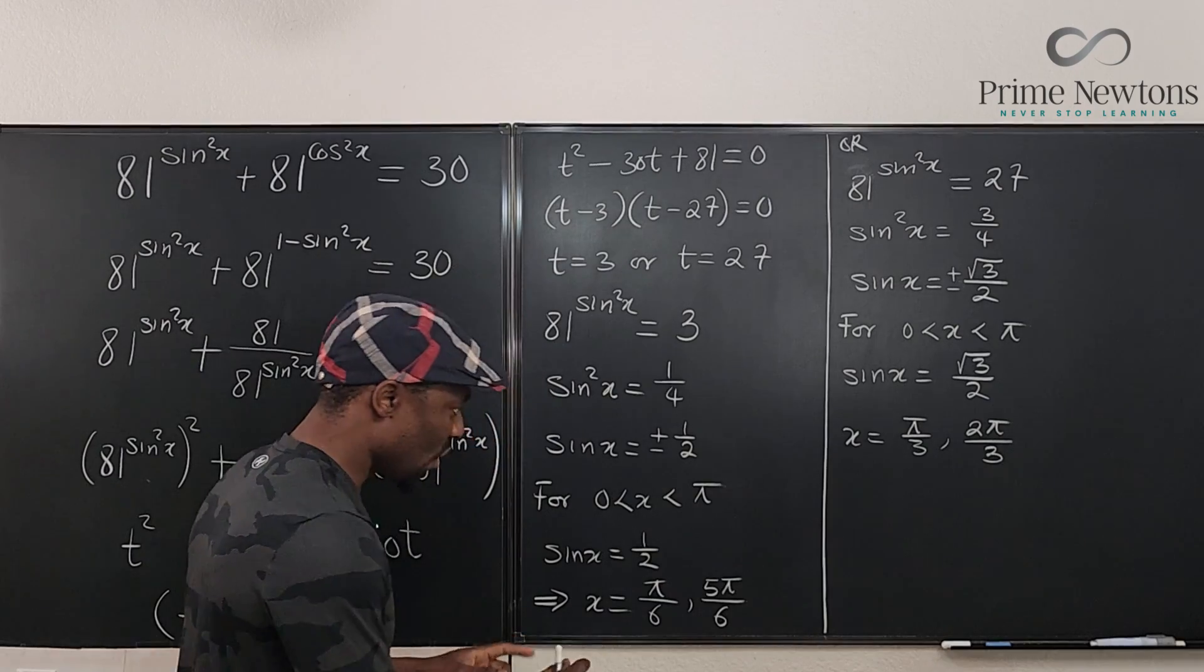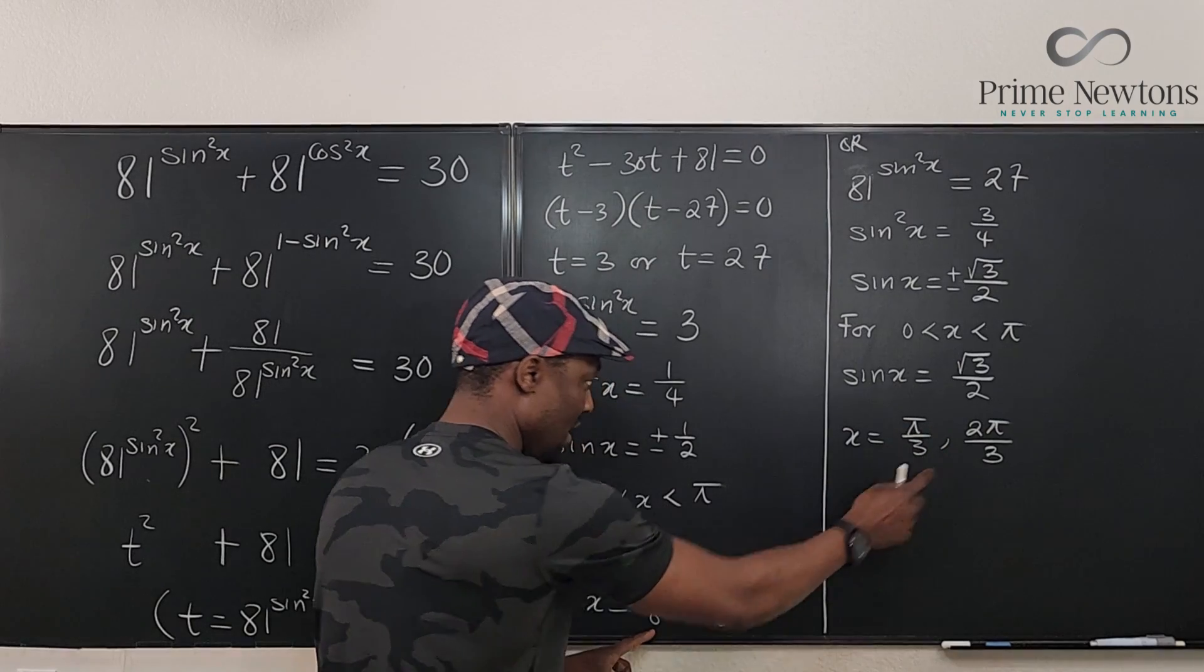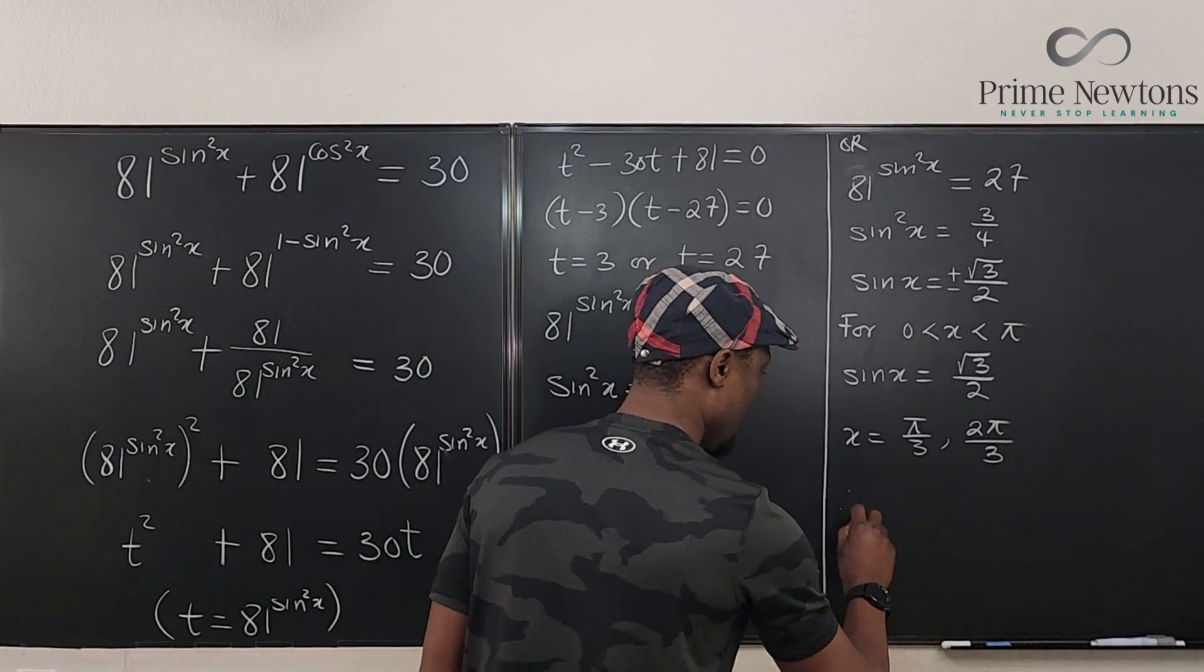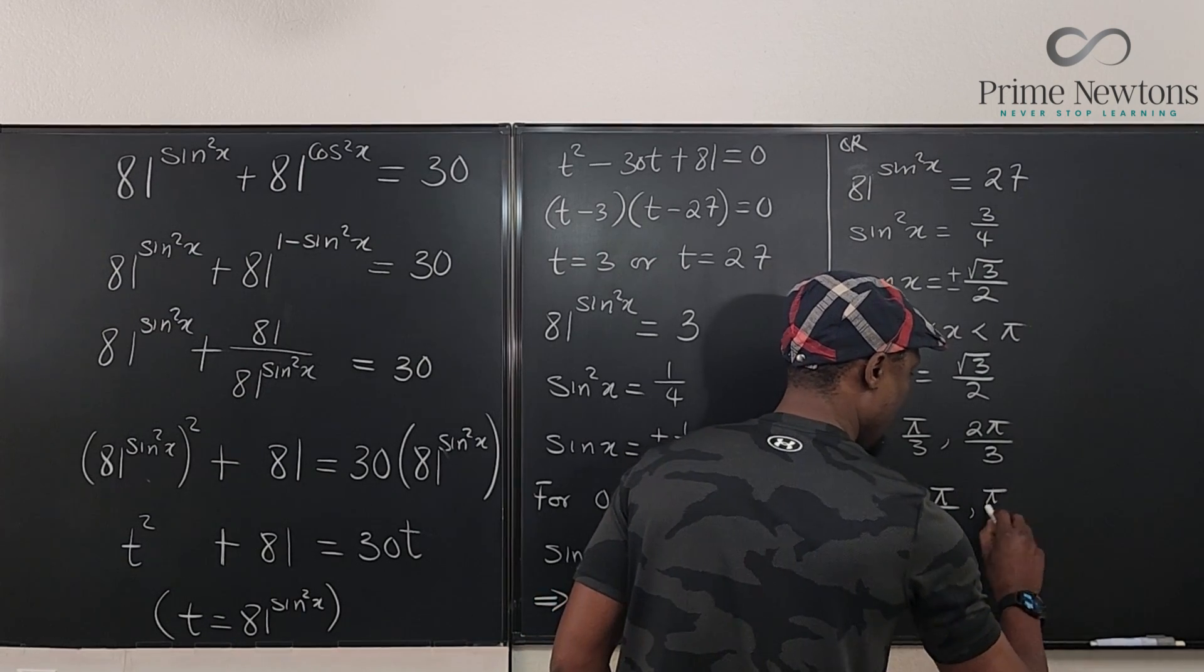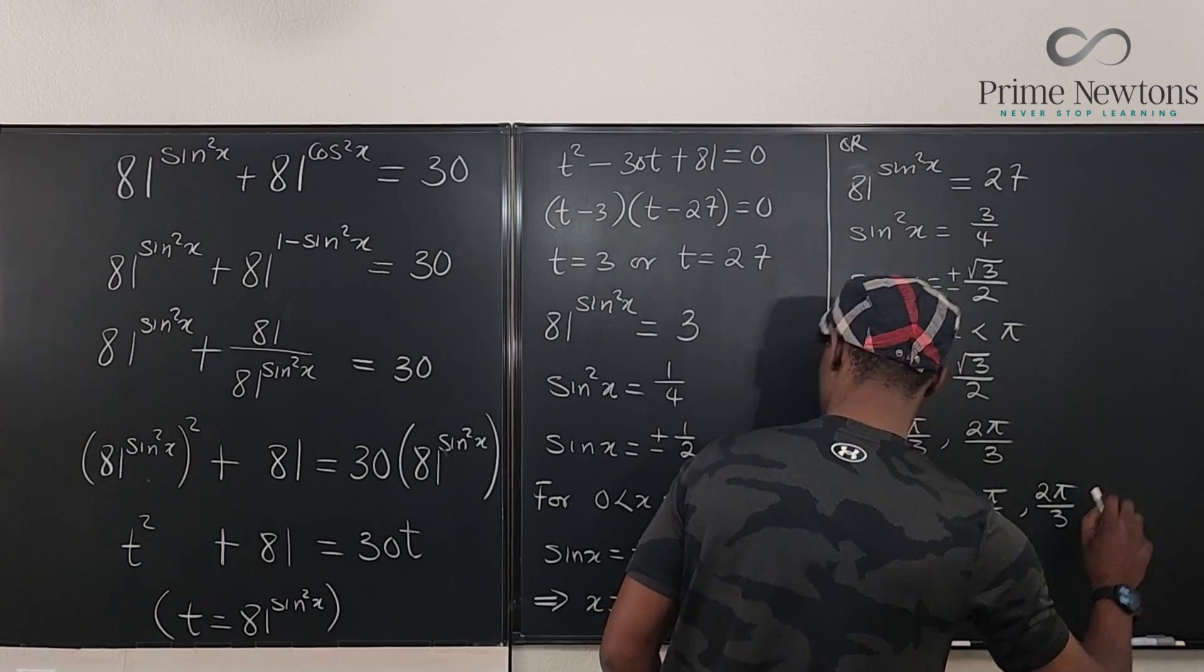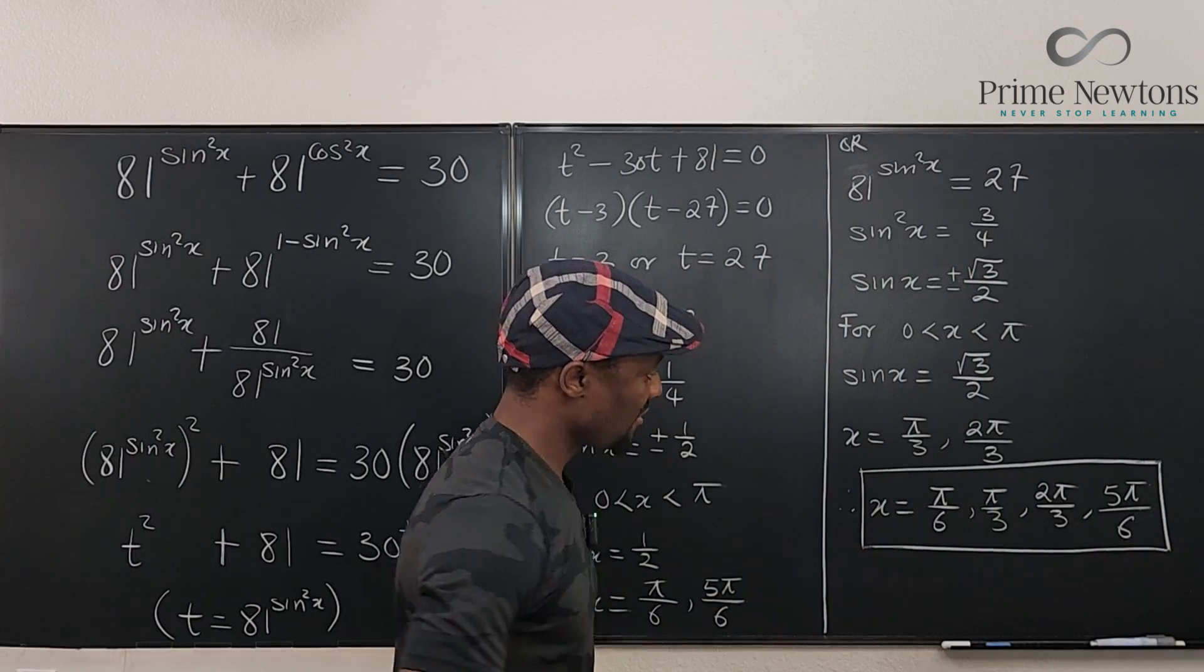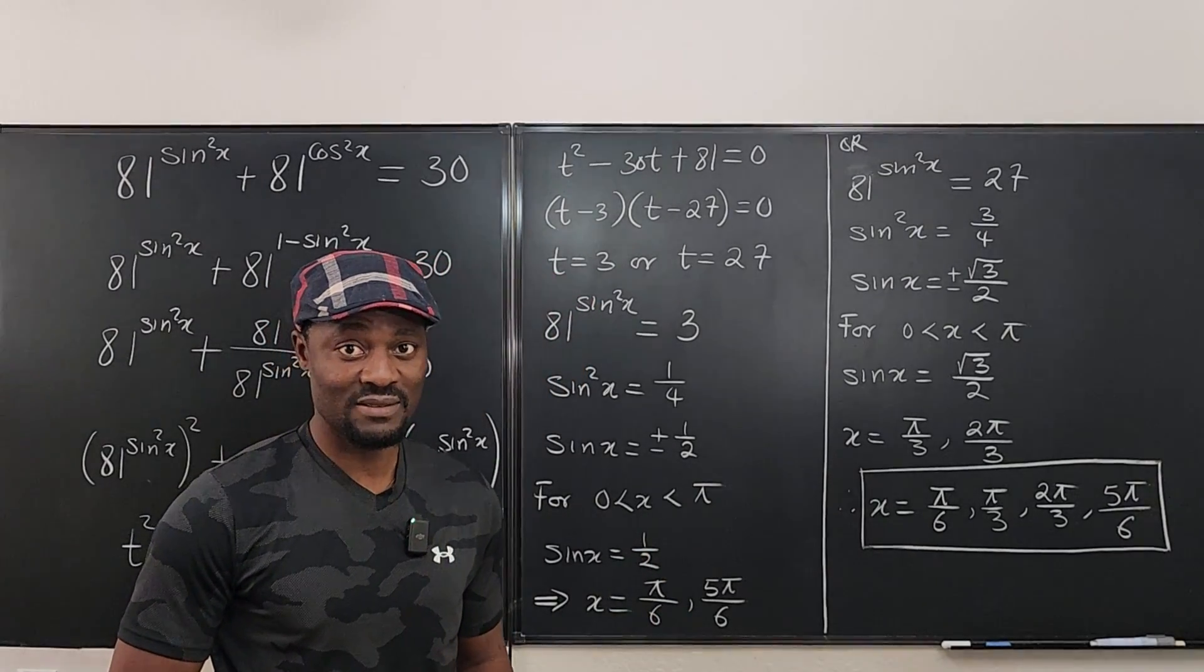So all the possible values of x you can get are pi over 6, pi over 3, 2 pi over 3, and 5 pi over 6. Therefore, x is equal to pi over 6, pi over 3, 2 pi over 3, and 5 pi over 6. Those are the possible values of x. Leave a comment in the comment section. Never stop learning. Those who stop learning, stop living. Bye-bye.